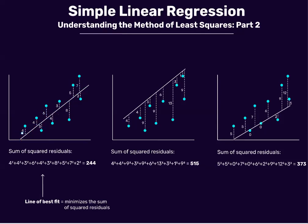Then we take the square of each residual and take the sum of all the squared residuals. For example: 4² + 4² + 3² + 6² + 4² + 3² + 8² + 5² + 7² + 2². When we take the sum of all those numbers we get 244.